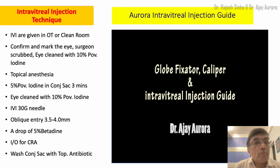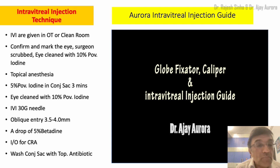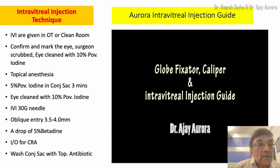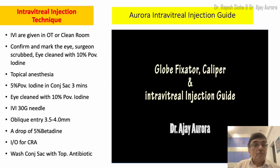Then you have to instill povidone iodine 5% into the conjunctival sac, and once that is done, clean and drape the eye and proceed with the injection. I normally inject anti-VEGF in the upper temporal quadrant because that area gets covered by the lid, and I use a 30-gauge needle to inject through the device. The entry is oblique, and because of this oblique entry, there is hardly any leakage from the point of entry. At the end of the injection, measure the intraocular pressure approximately, and if you think it is high, perform indirect ophthalmoscopy to rule out absence of central retinal arterial pulsations.